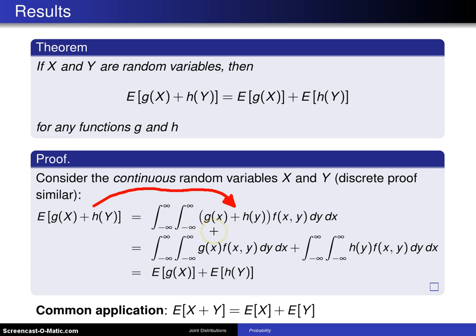It's fine to run both limits from negative infinity to infinity. g of X can be multiplied by f of X, Y and there's one double integral, and then h of Y can be multiplied by f of X, Y in this fashion. So broken into two double integrals.